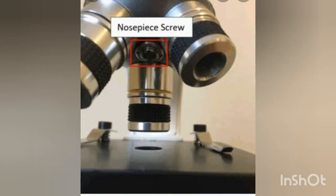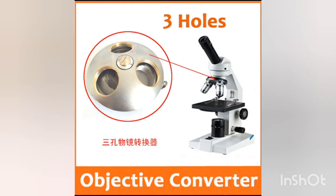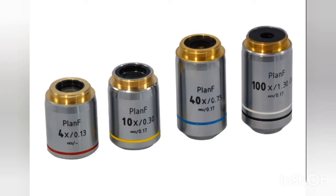The objective lenses come in increasing magnifications, and depending on the microscope, the nose piece can hold anywhere from 3 to 5 objectives. The revolving nose piece is an inclined circular disc — a metal plate — to which 3 to 5 objective lenses of different power are attached.